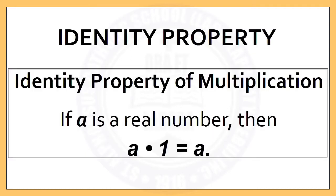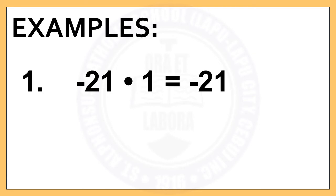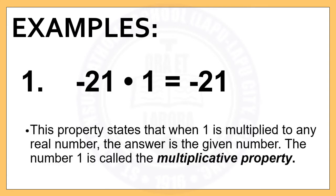The second kind of Identity Property is the Identity Property of Multiplication. This property states that if A is a real number, then A times 1 is equal to A. This property states that when 1 is multiplied to any real number, the answer is always the given number. The number 1 is called the multiplicative identity.